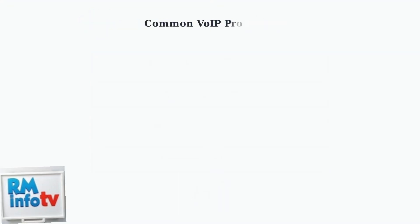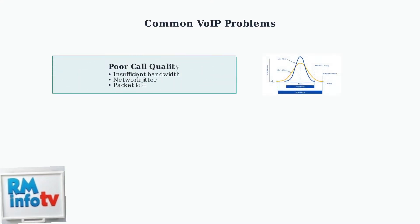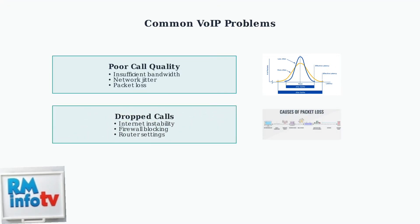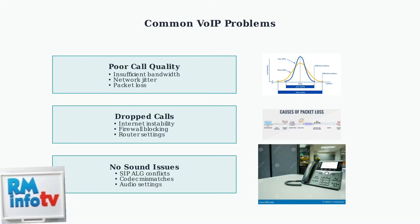VoIP systems face unique challenges that don't affect traditional landlines. Poor call quality often results from insufficient bandwidth. Network jitter causes timing variations that make audio choppy and unclear. Dropped calls typically occur due to internet instability or incorrect firewall settings that block VoIP protocols and ports. No sound issues often stem from SIP ALG problems in routers or codec mismatches between different VoIP systems.